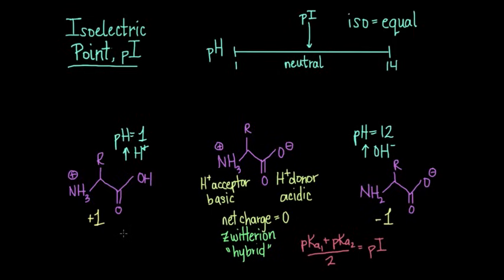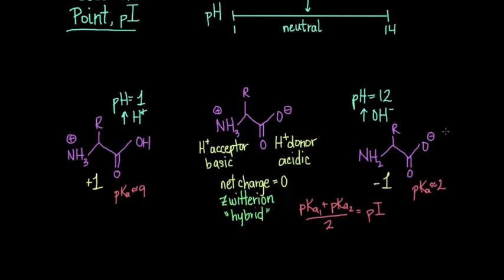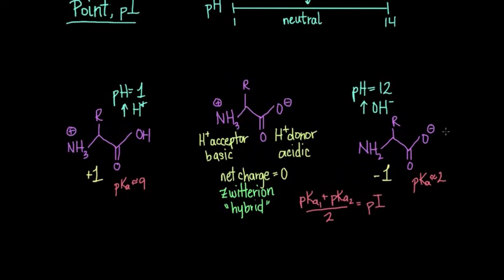So on average—and it varies between all the different amino acids—but on average, the amino group has a pKa of around 9, and the pKa for the carboxylic acid group is right around 2. So now if we just give ourselves a little bit more room here, we can calculate what the pI or isoelectric point would be for our generic amino acid.